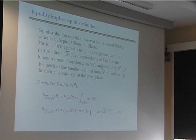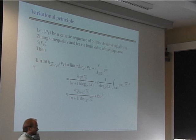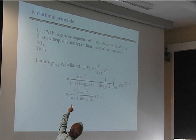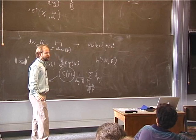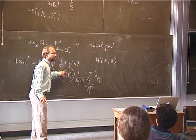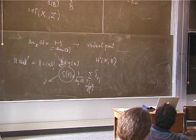Now I take a generic sequence of points and look at what happens. I am interested in the distribution of the measures δ_{P_k}. I take a measure ν on X(ℂ) which is a limit of those measures, and I try to deduce what I can about ν from Zhang's inequality.